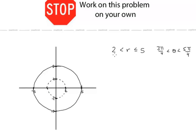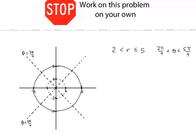We start by drawing our two circles, r equals 2 and r equals 5. Notice that we have the strict inequality r is greater than 2, not equal to 2, so I'm putting a dotted line for this circle because we're not including those points. Now let's sketch in theta equals 3π/4 and theta equals 5π/4, and again both of these will have dotted lines. So we want the region where the r values are between 2 and 5, and the theta values are between 3π/4 and 5π/4 — that's this region.